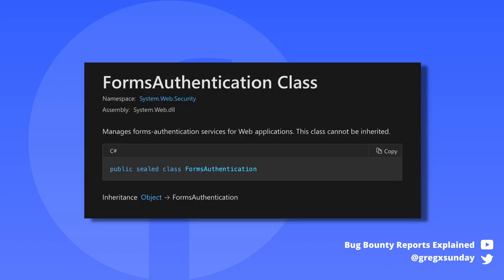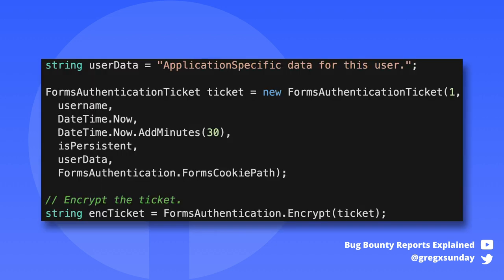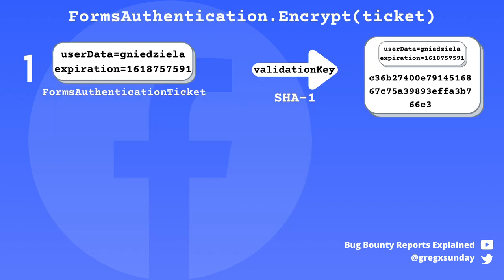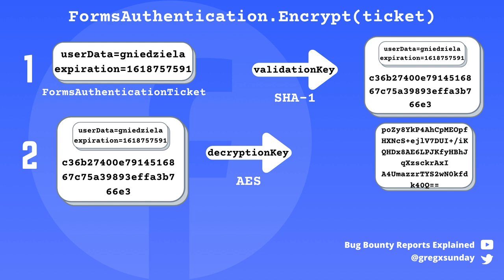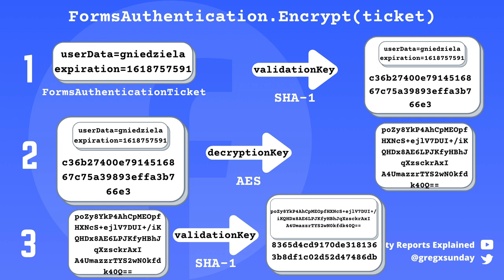It's a default cookie name from the standard .NET forms authentication class. It works this way: there is a thing called a ticket, which contains data that you want stored inside the cookie — usually data that can identify the user, for example username or user ID. First, the ticket in cleartext is signed using the SHA-1 algorithm. Then the whole ticket along with the signature is encrypted. And then the encrypted block is signed again using SHA-1.